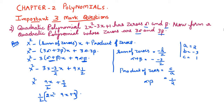Checking: alpha plus beta is minus(minus 3) by 2, which is plus 3 by 2, and minus into plus is minus. So the required polynomial is one-half times (2x² minus 9x plus 9).